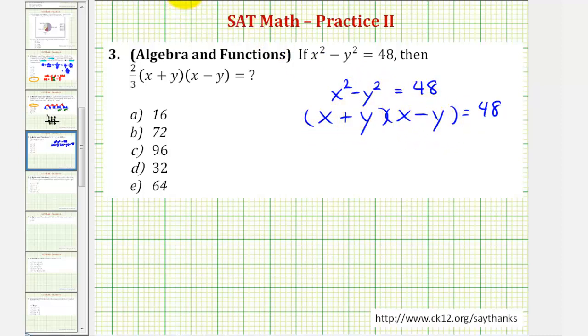Notice how these two factors are in this expression here, which means we can substitute 48 for these two factors in this expression. So if we have 2/3 times the quantity x plus y, times the quantity x minus y, and we just saw that these two factors are equal to 48.